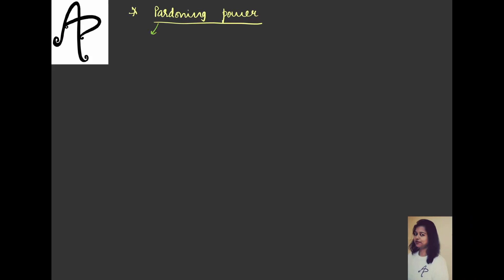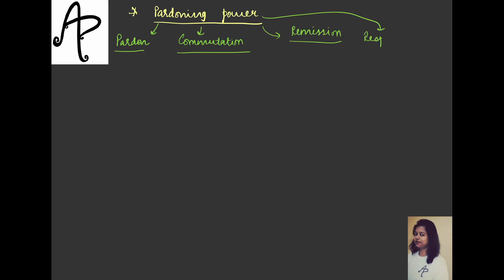Starting with this Constitution, it includes five major key terms. One is suspension — you understand suspension so I will not take that here — but the other keywords are: pardon, commutation or commute, remission or remit, then respite and reprieve. If you understand these five terms, your work is sorted here. Now let's see them one by one.